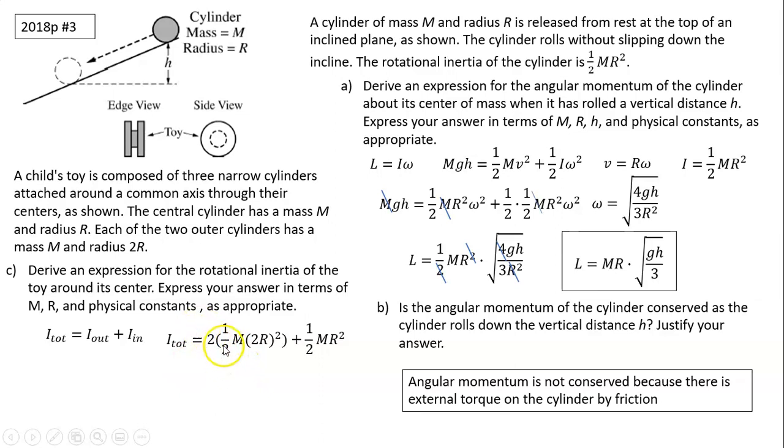Simplify this. Two on the top and two on the bottom cancels. You have the first term, you have 4MR squared. Second term is one-half MR squared. So that's 4 and a half, which is 9 halves MR squared. That is the total moment of inertia for this toy.